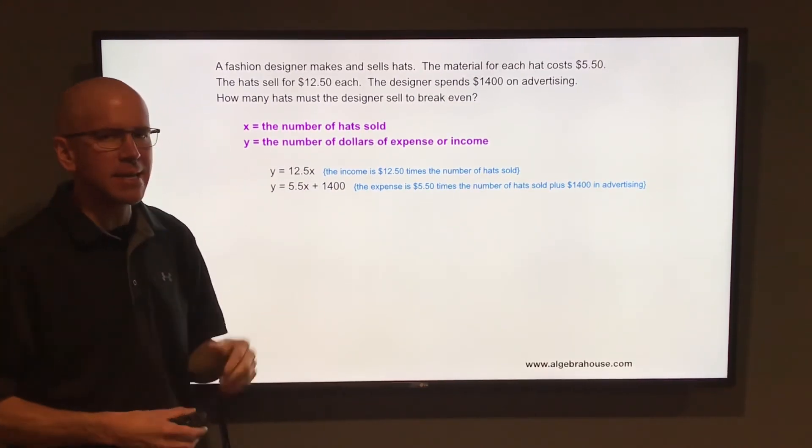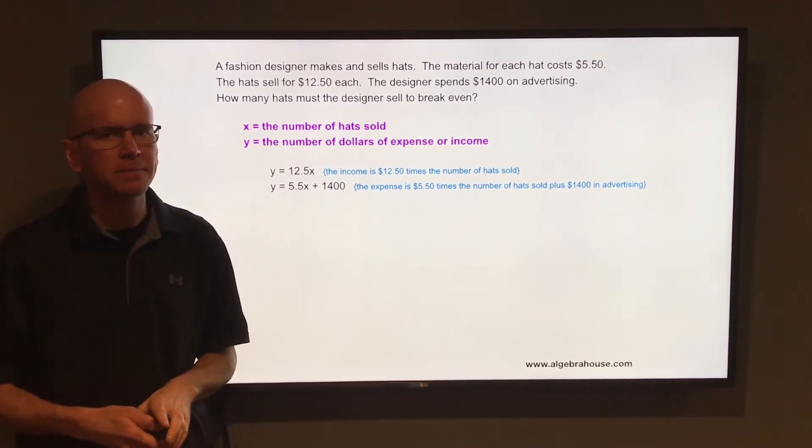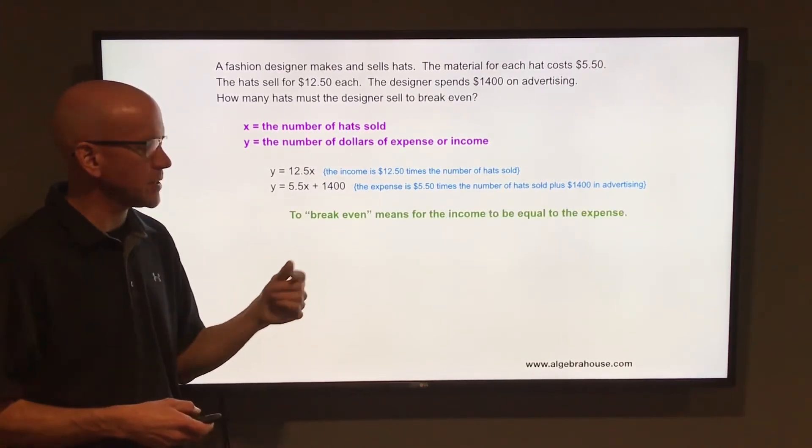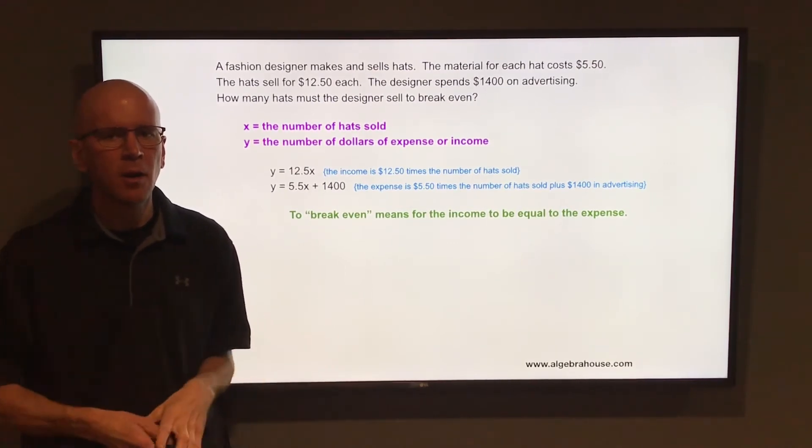So 12.5X is the income. 5.5X plus $1,400, that is the expense. We're going to set those equal to each other in order to break even. Break even means the expenses and the income are the same.